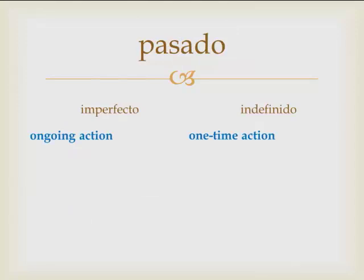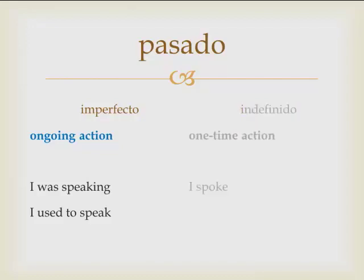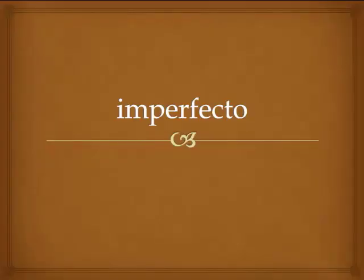To recap: pasado in Spanish has two tenses — the imperfecto and the indefinido. The primary difference is that the imperfecto is an ongoing action, while the indefinido is a one-time action. To translate: imperfecto would be 'I was speaking' or 'I used to speak,' whereas the indefinido would be 'I spoke.' Our focus for today is the imperfecto — a past tense which communicates an ongoing action in the past.